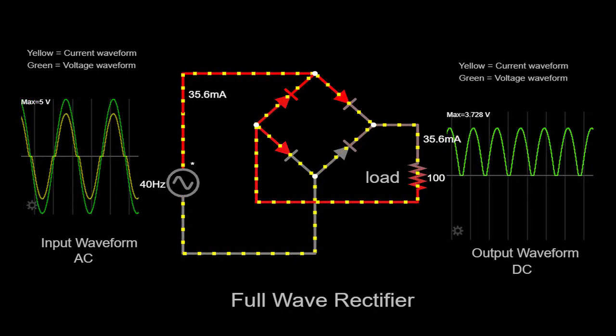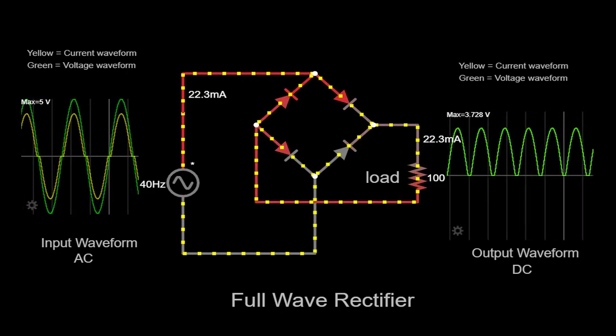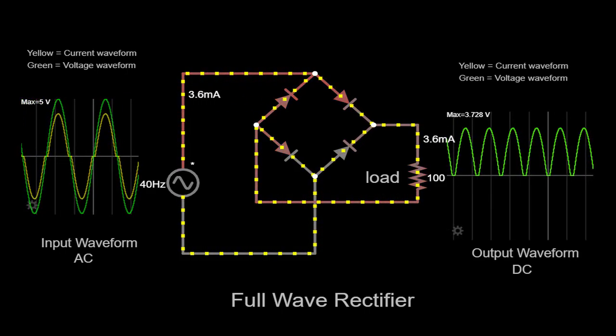The output waveform is a pulsating DC signal that can be further filtered to obtain a smoother DC voltage using capacitors or other filtering techniques.